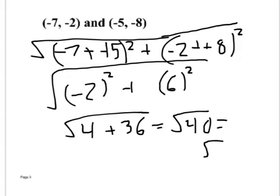That gives us the square root of 40, which we need to simplify. Square root of 40 equals square root of 4 times square root of 10. Square root of 4 is 2, so the answer is 2 square root of 10.